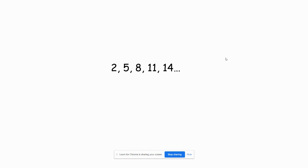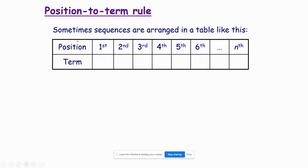And that's what we're going to look at today. It's called the position-to-term rule. The position is the first term, the second term, the third term, the fourth term, and so on. The term itself is what number is in the sequence. This terminology is going to be fairly important. And then there's an nth over here — an n with a little 'th'.